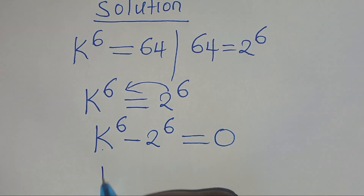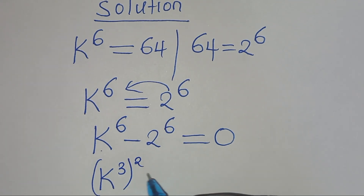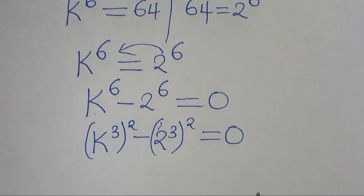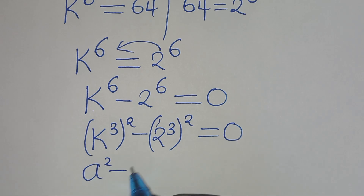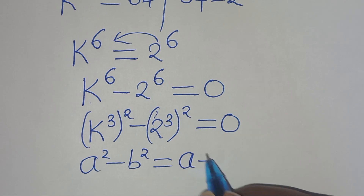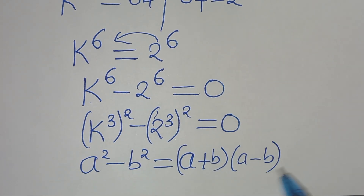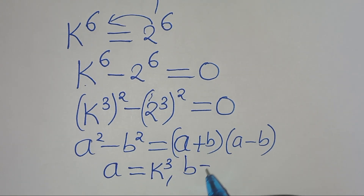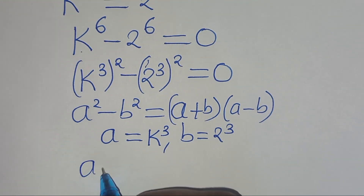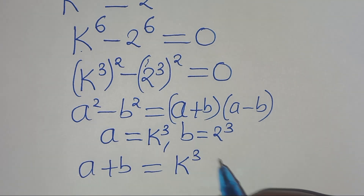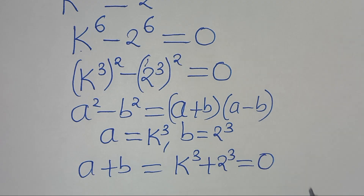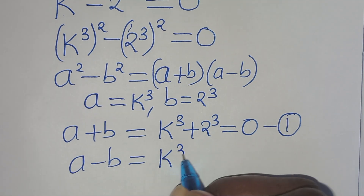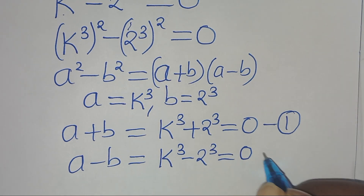We can express k to the power of 6 as k to the power of 3 raised to the power of 2, subtract 2 to the power of 6, this is the same thing as 2 to the power of 3 raised to the power of 2, this is equal to 0. This equation is in the form of a squared minus b squared — the difference of two perfect squares — that can be expressed as (a + b)(a - b). We have that a equals k to the power of 3, and b equals 2 to the power of 3. Therefore, a plus b gives k to the power of 3 plus 2 to the power of 3 equals 0 (equation 1), and a minus b gives k to the power of 3 subtract 2 to the power of 3 equals 0 (equation 2).